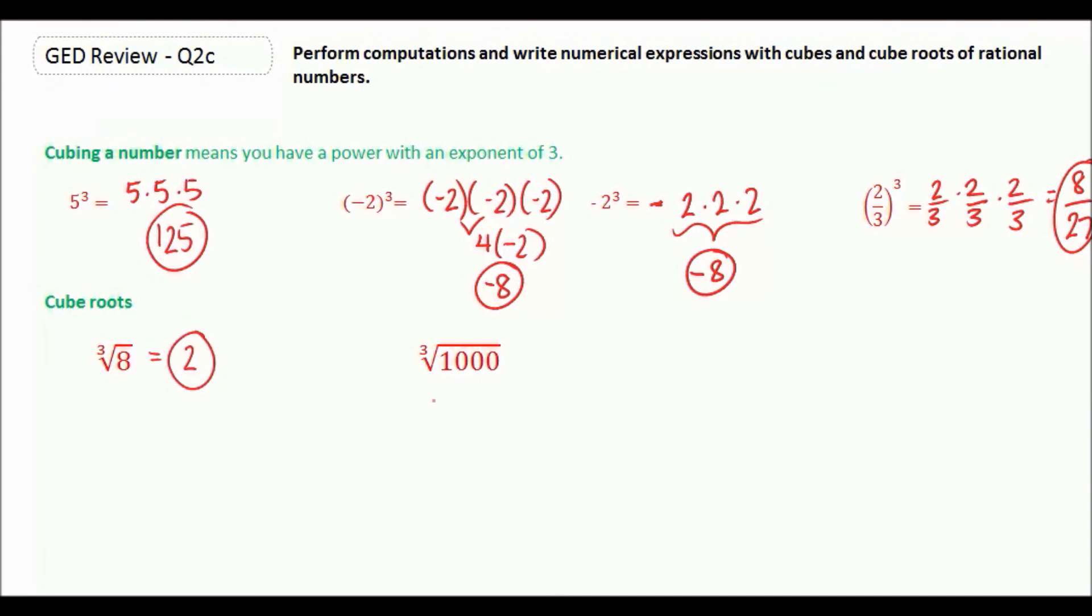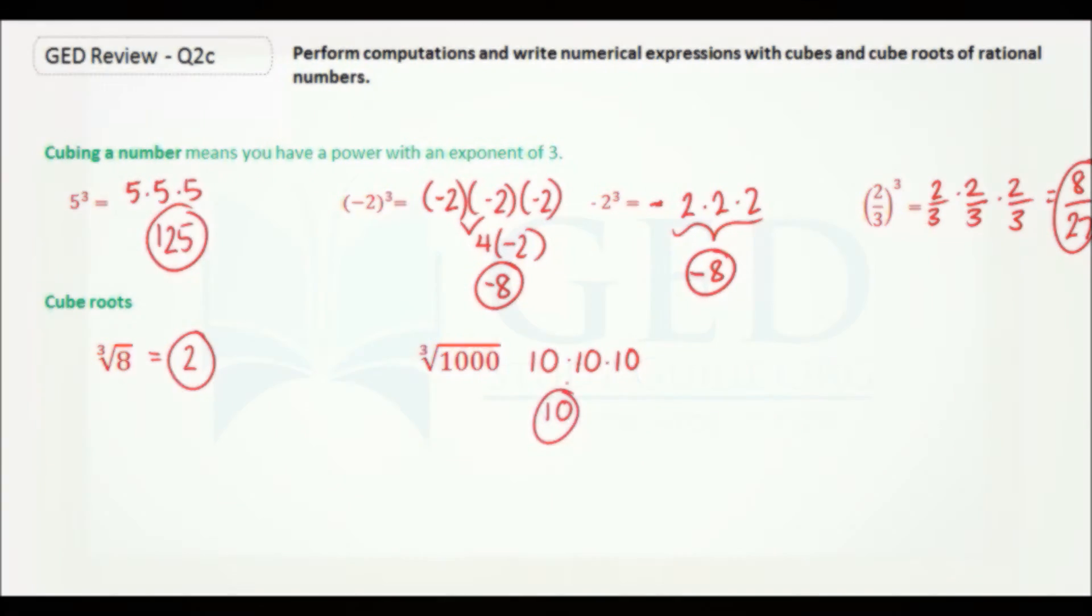The cube root of a thousand. If we took 10 and multiplied that by 10, it would be 100. And 100 times 10 again would be 1,000. So the answer for the cube root of 1,000 is 10.